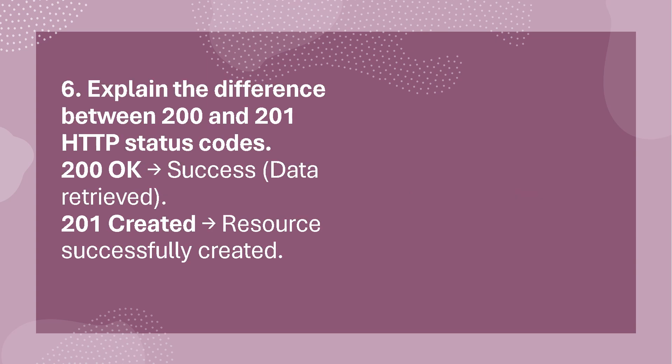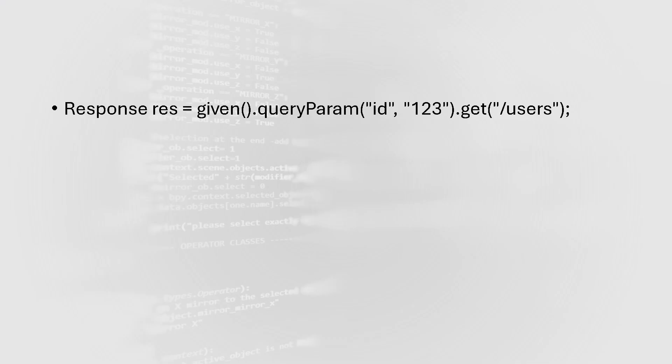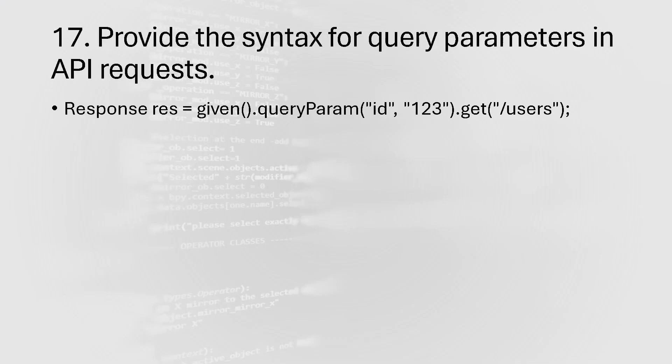Explain the difference between HTTP status codes 200 and 201. As mentioned previously, answer in detail. Briefly: 200 means OK — success, data retrieved. 201 means Created — resource successfully created. For the syntax of query parameters in API requests, you can write: `Response res = given().queryParams("id", 1).get("/users")`. This is the syntax you should remember and write when asked.